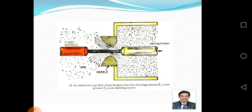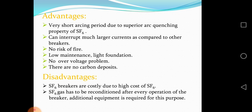This diagram shows arc extinction in a gas flow SF6 circuit breaker. In the yellow color you see the nozzle and in the red color you see the fixed contact. The advantage is a very short arcing period due to the superior arc quenching property of SF6.